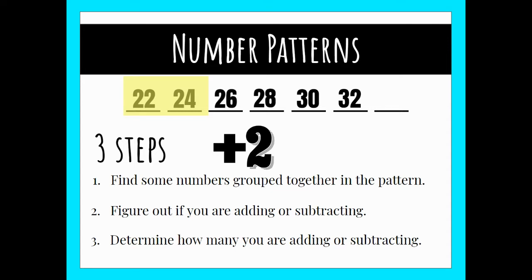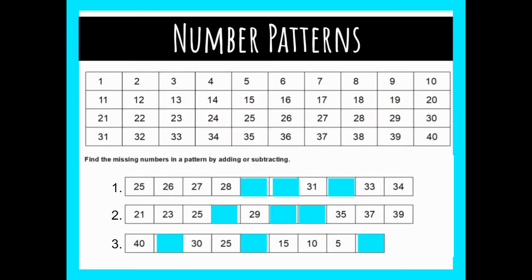Then 30 was already plugged in, 32 was plugged in, but two more than 32 is 34. So that's how I solve for missing numbers in a number pattern. Let's do a few more examples.